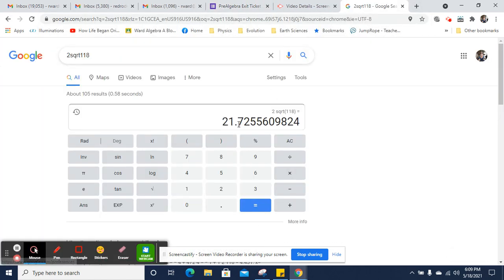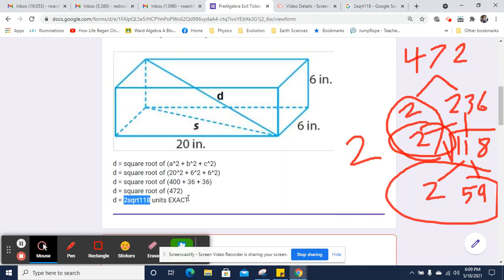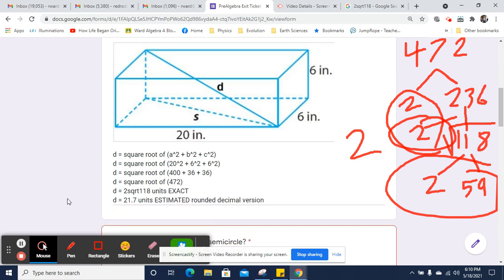2 times the square root of 18 is going to be about 21.7. So d equals 21.7 units estimated bounded decimal. Okay, so there we go.